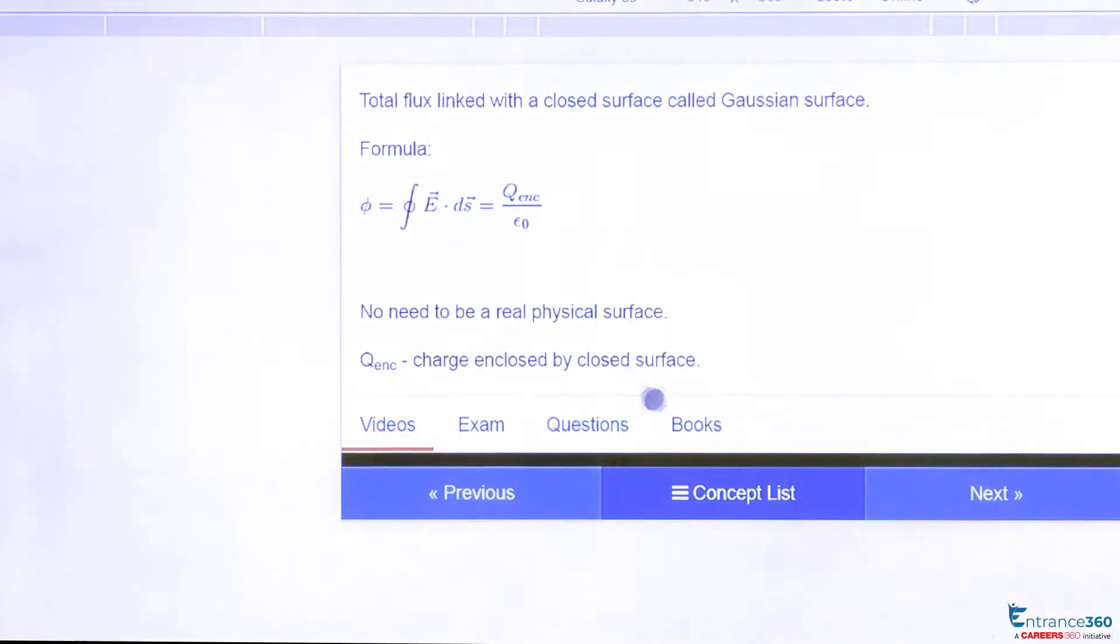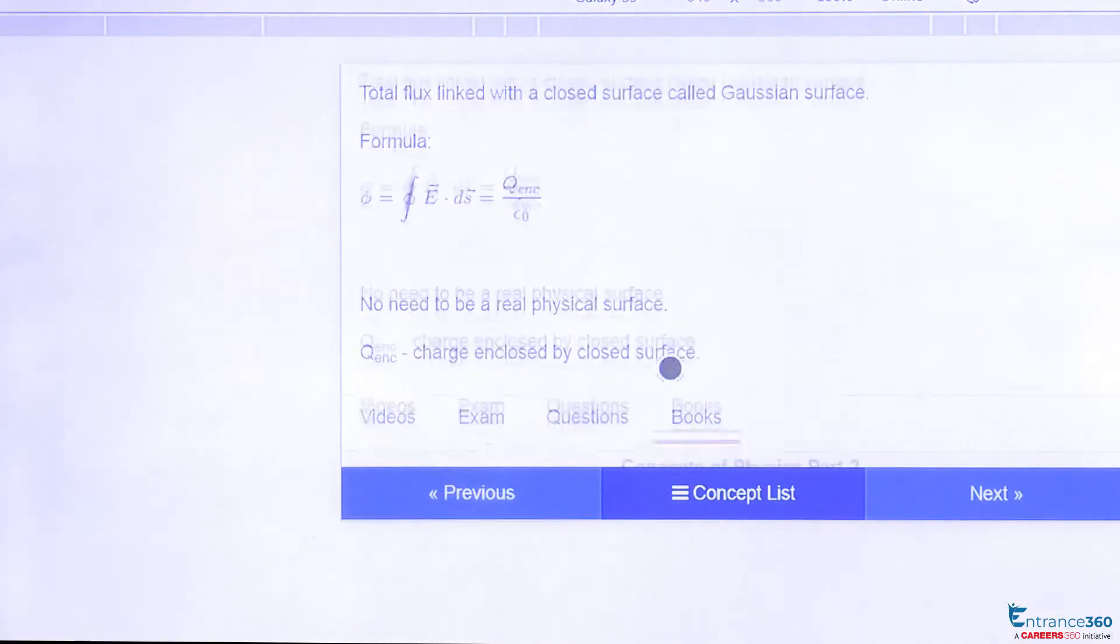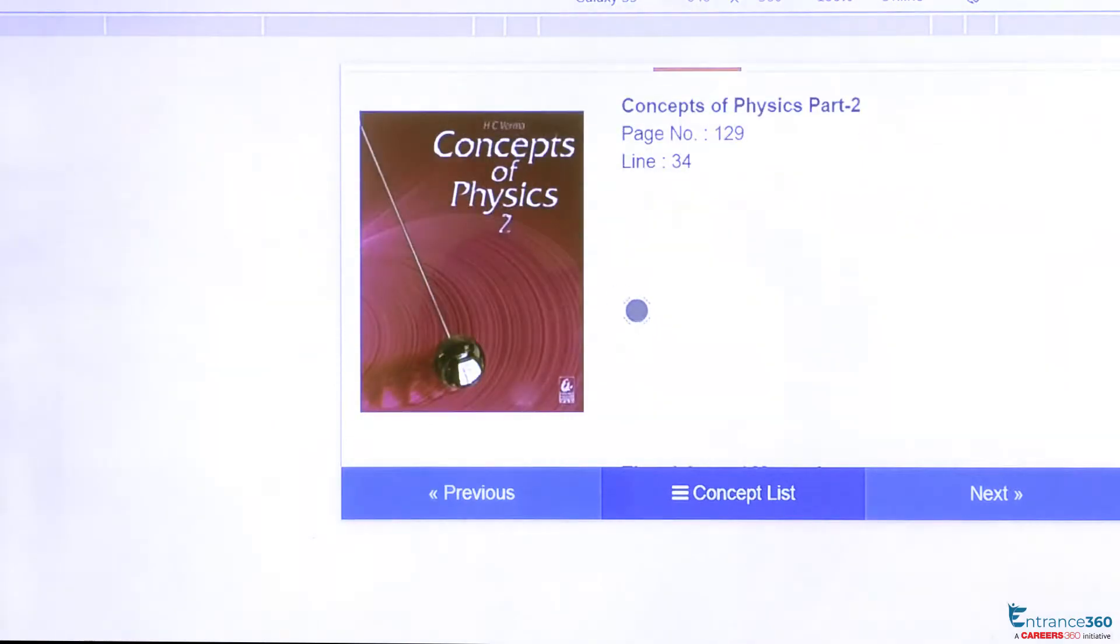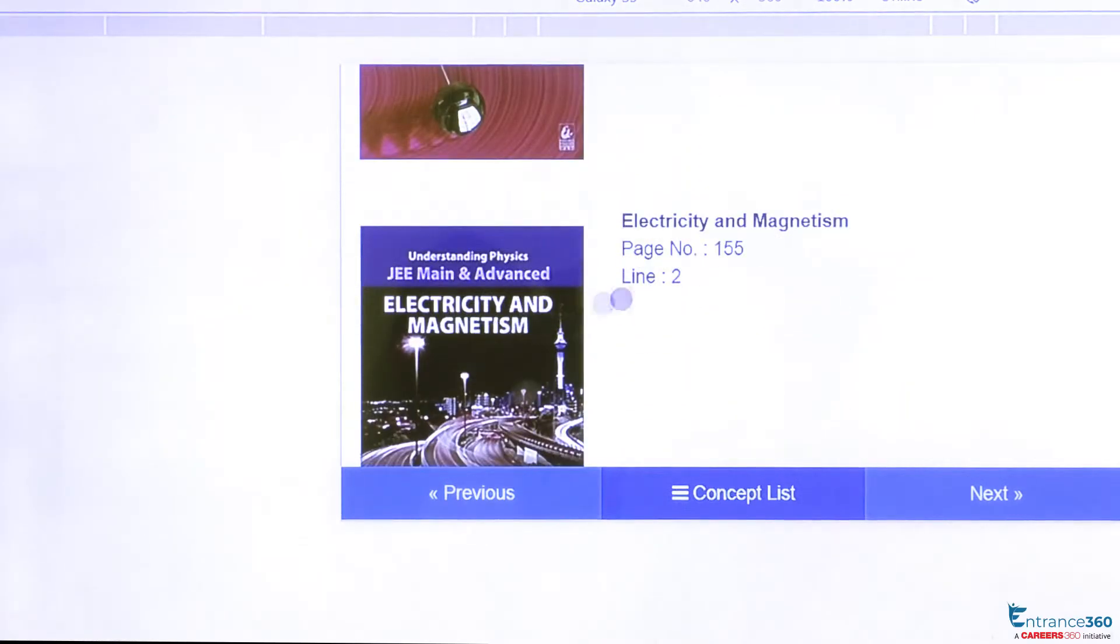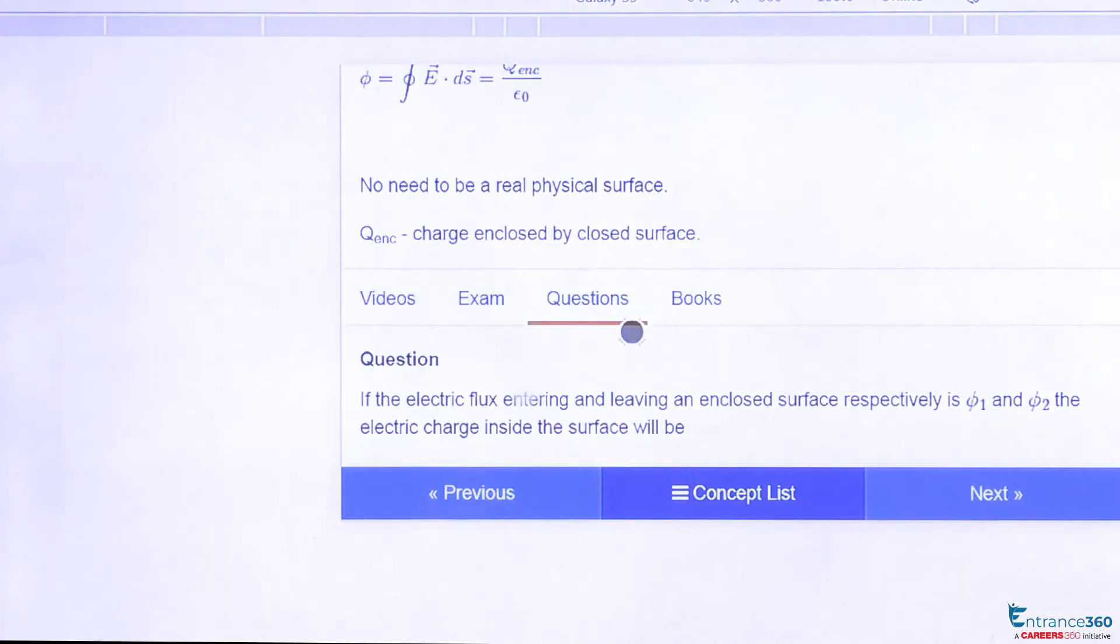If you still are not convinced, you can go to books like Concept of Physics Part 2 at page number 129 line 34. You will also get this concept in the book DC Pandey's Electricity and Magnetism at page number 155 line 2. You can also try questions based on this concept here.